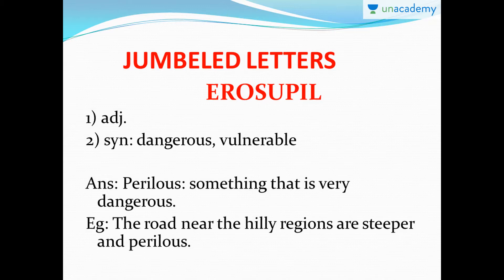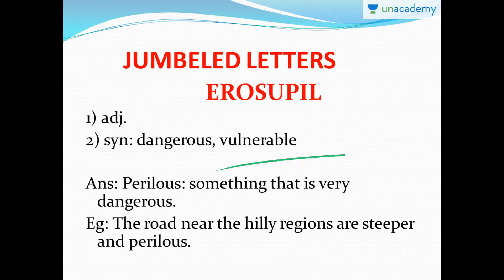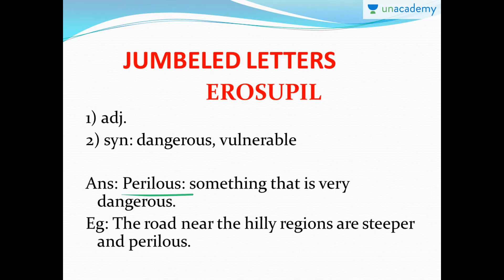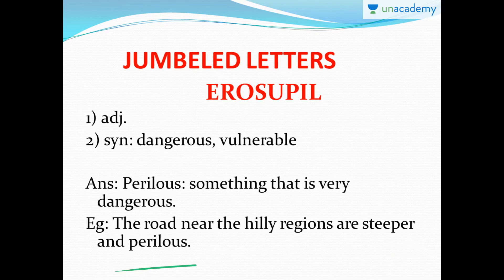Here are the jumbled letters suggested in the previous lesson: E-R-O-S-U-P-I-L. The hint was that it's an adjective and the synonym is dangerous. If you rearrange the letters, you arrive at the word perilous, which means something very dangerous. Example: the roads near hilly regions are steeper and perilous — one must be extra vigilant while driving there, as it is a dangerous and accident-prone area.